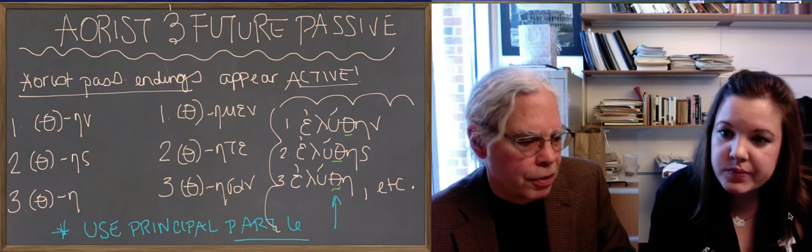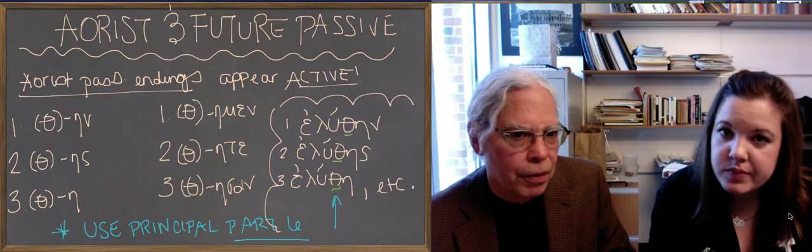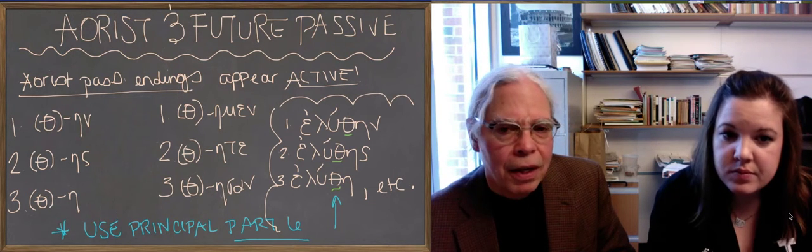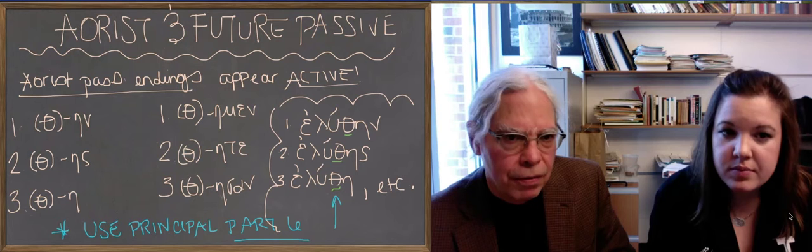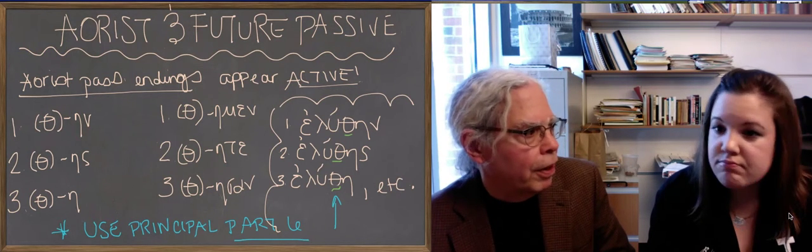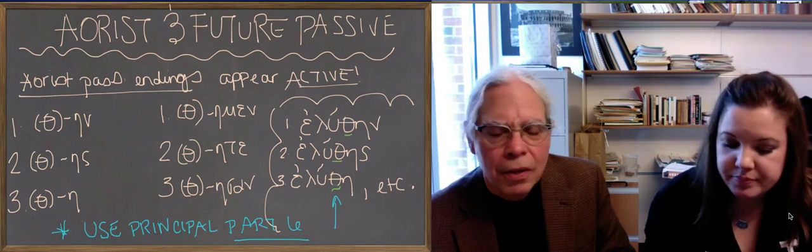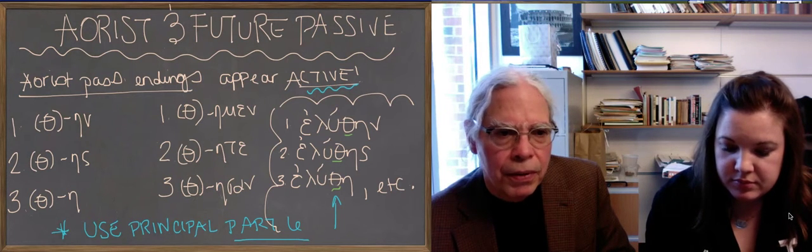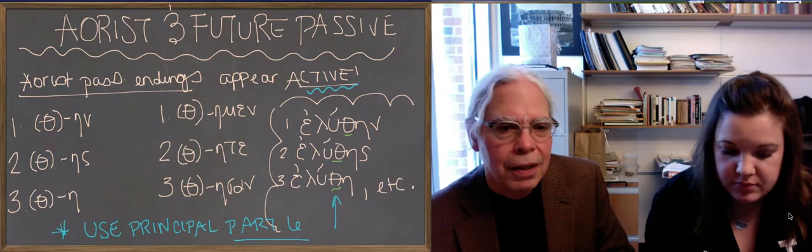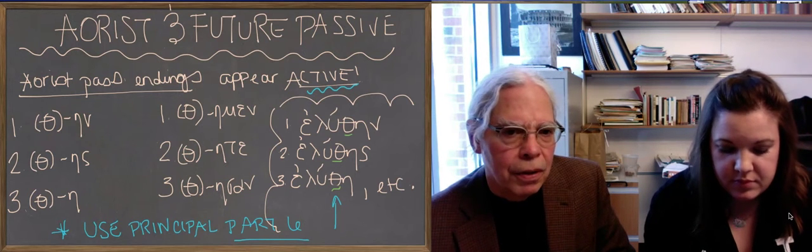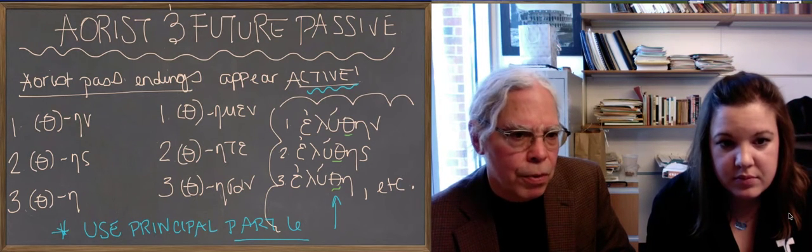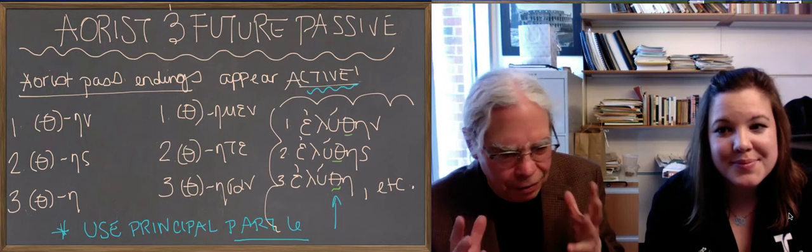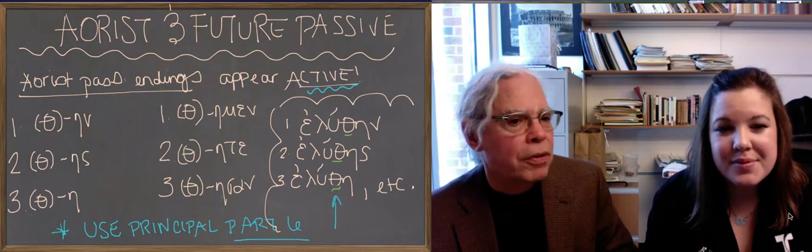The key weirdness is that the aorist passive has endings that are familiar to you from active verbs. So what makes them passive is not the endings, but the theta eta. And notice that the eta remains all the way through and the theta is becoming an obligatory part, because you need something totally different to say this is passive.